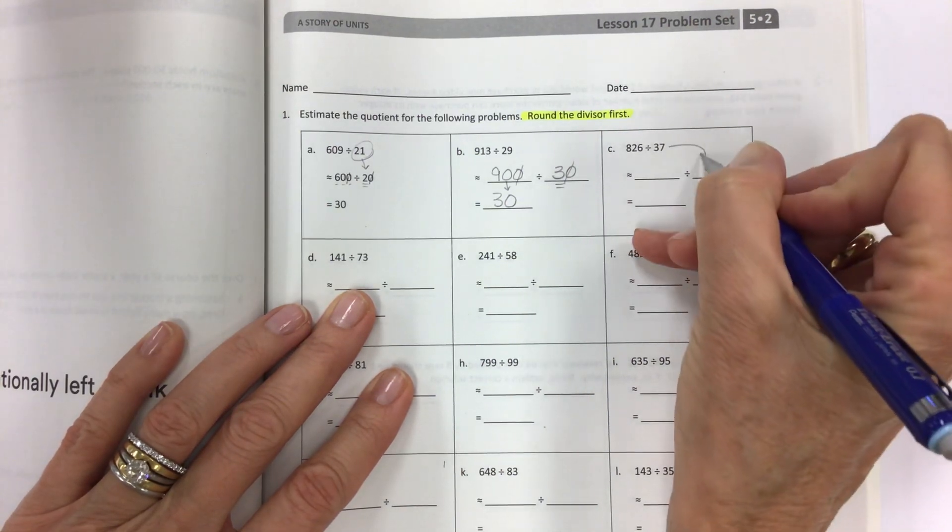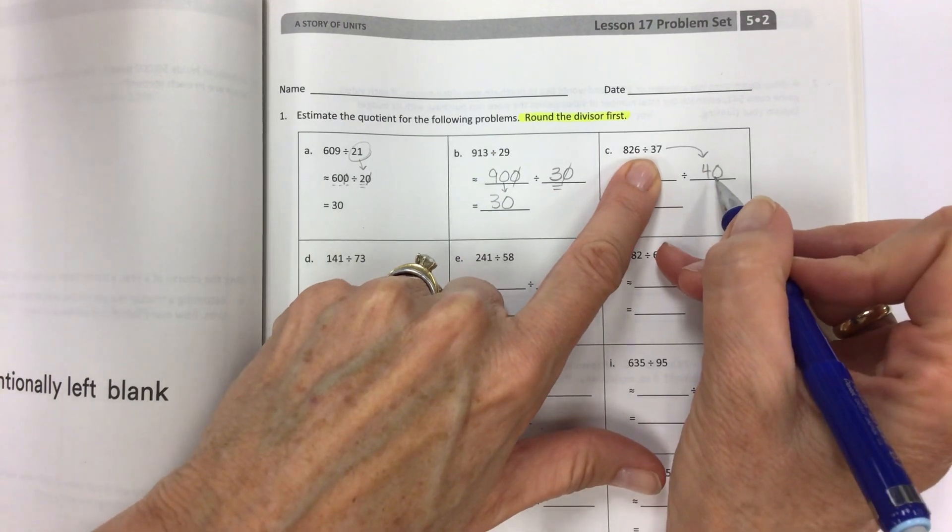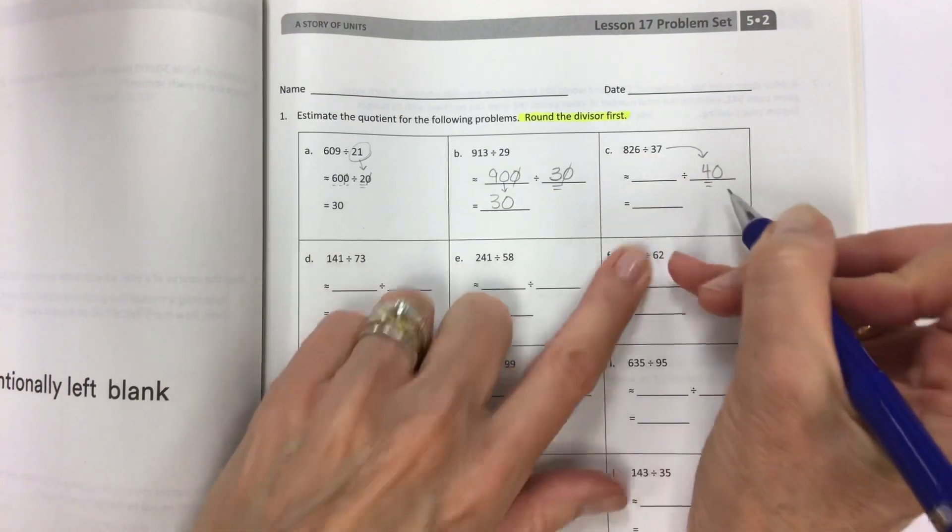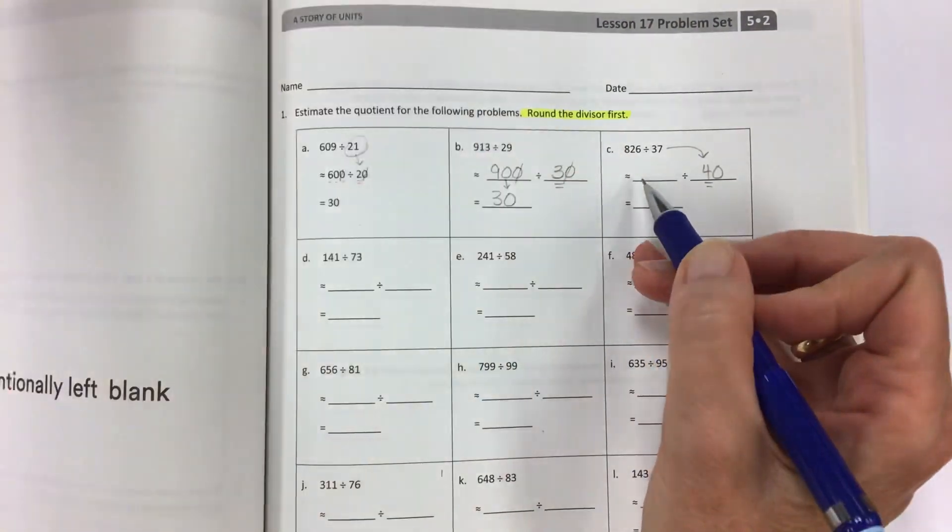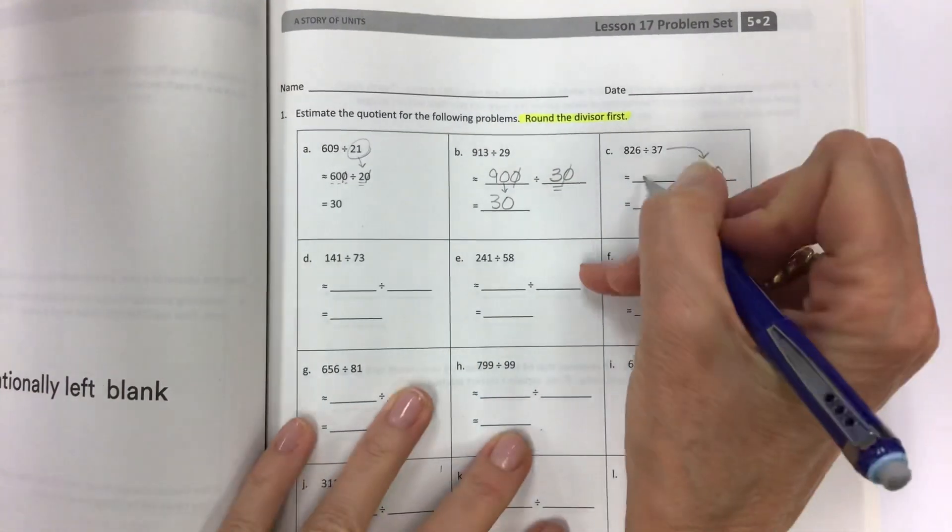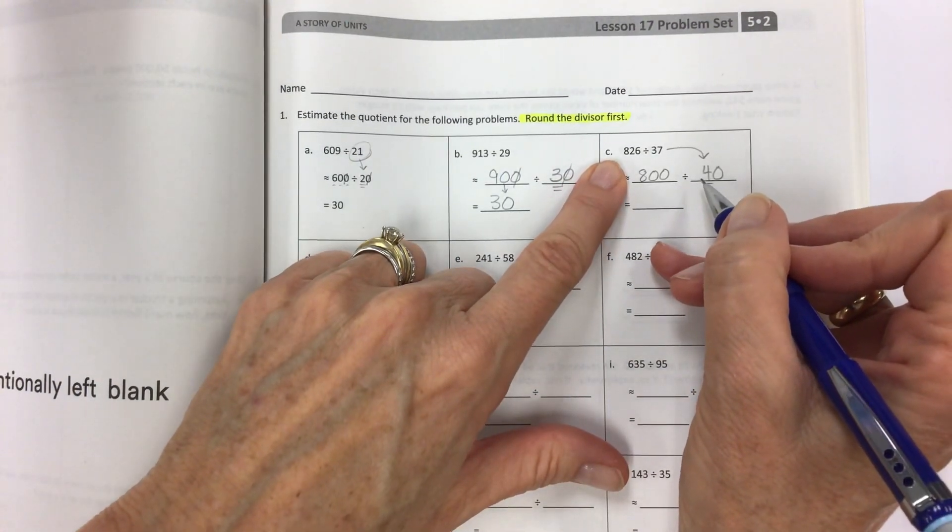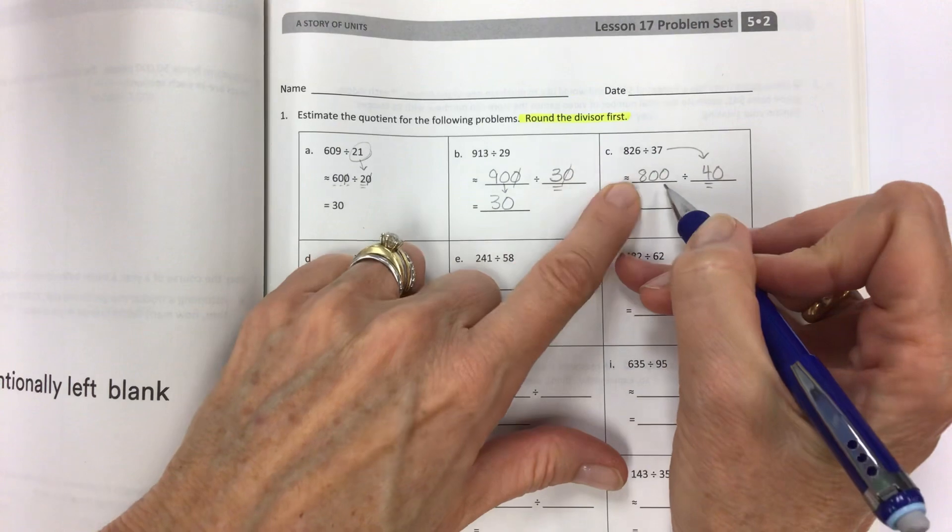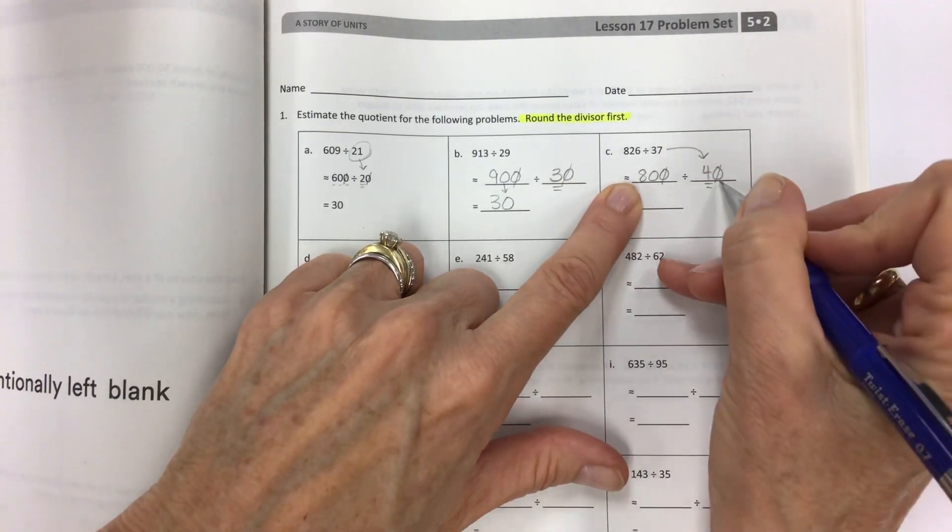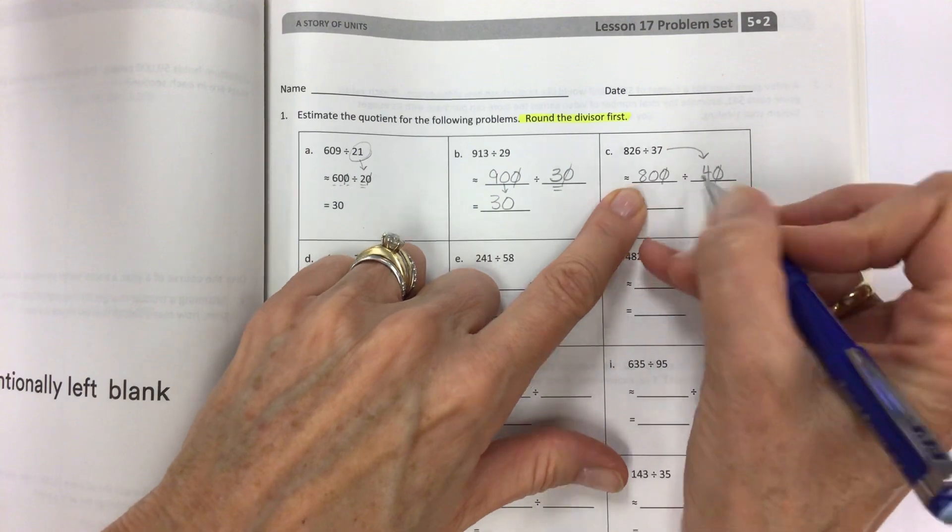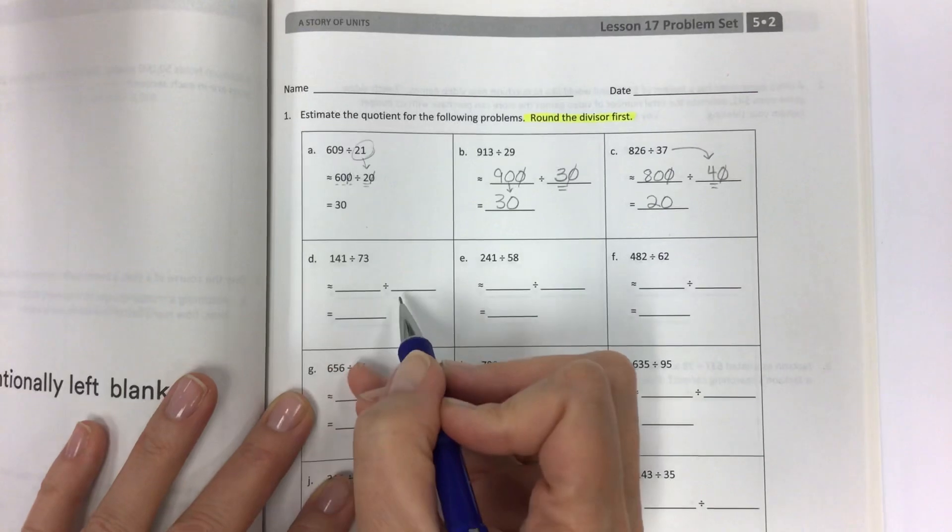Round the divisor first. You guys are going to get tired of hearing me say that. I don't care. You need to hear it a hundred times. Round the divisor first. Round it to 40. Now I need a multiple of four that is really close to 826. They start out pretty easy. And then they start making it a little bit harder, kind of like they did with decimals a couple lessons ago. So just drop that down to 800. Offset the zeros. So divide both by 10. 8 divided by 4 is 2. And we have a zero.